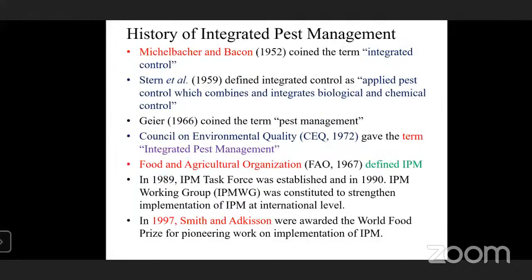Coming to the history of integrated pest management: in 1952, Michael Becker coined the term 'integrated control,' applying an integrated approach combining insecticides and biological control. Stern et al. later defined integrated control as applied pest control that combines and integrates biological and chemical control.